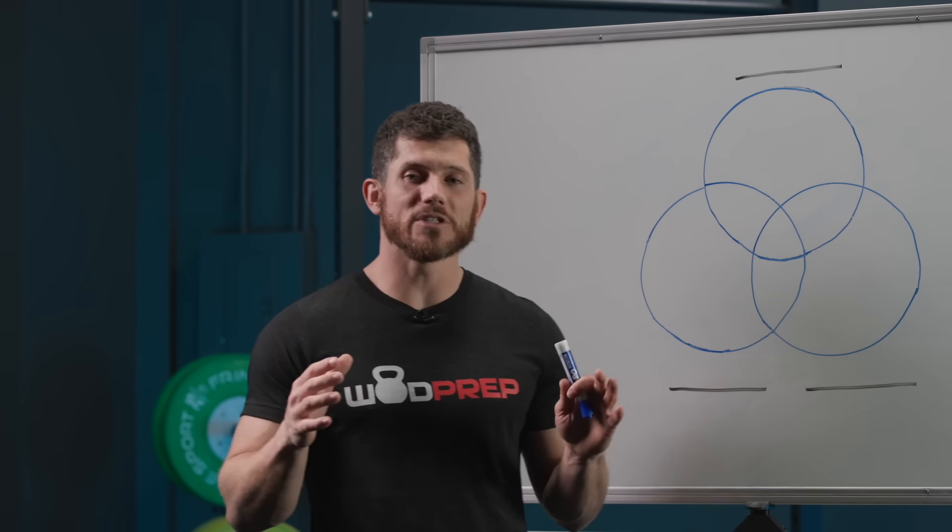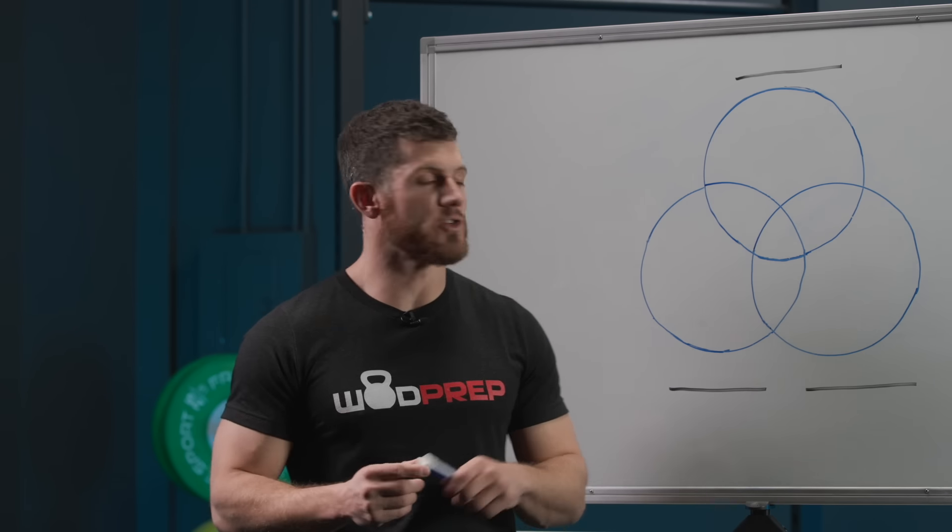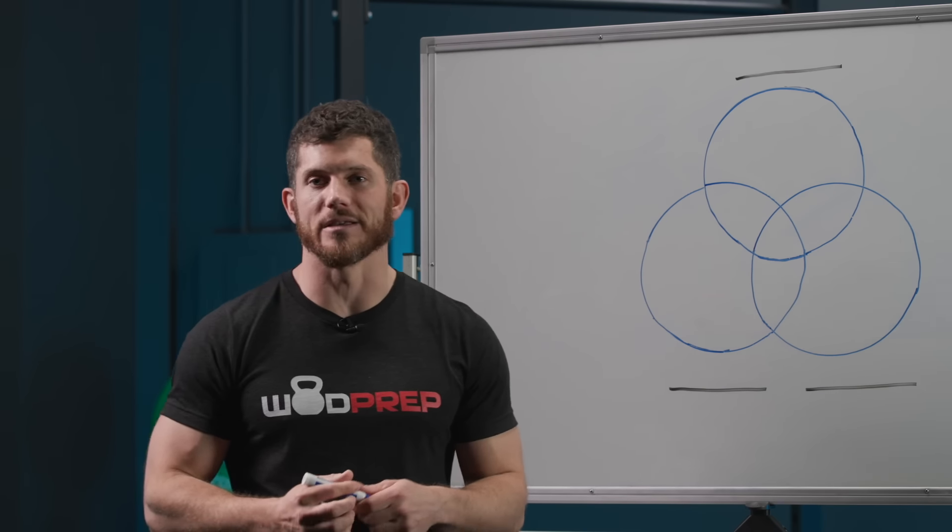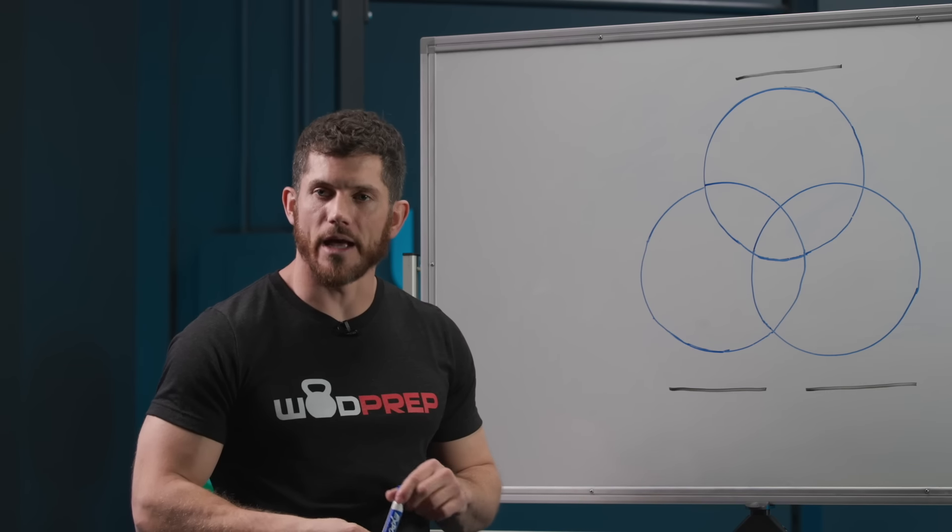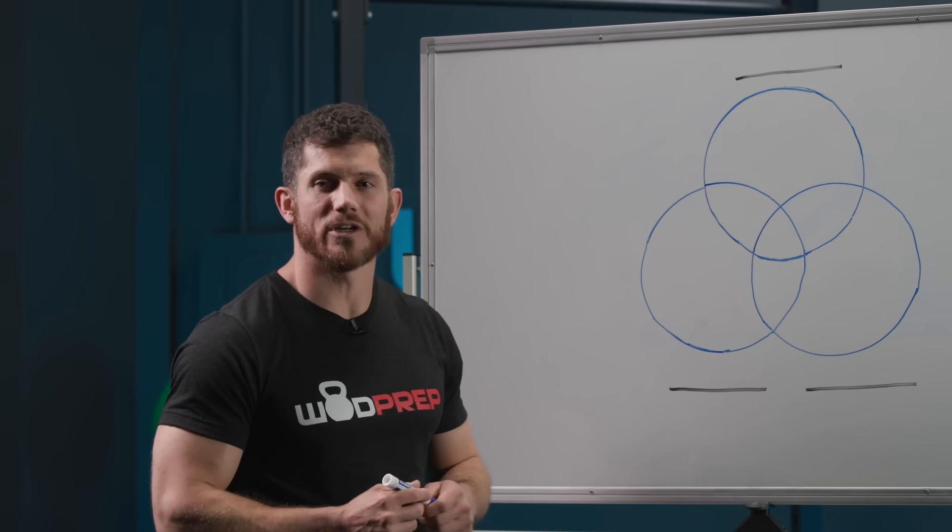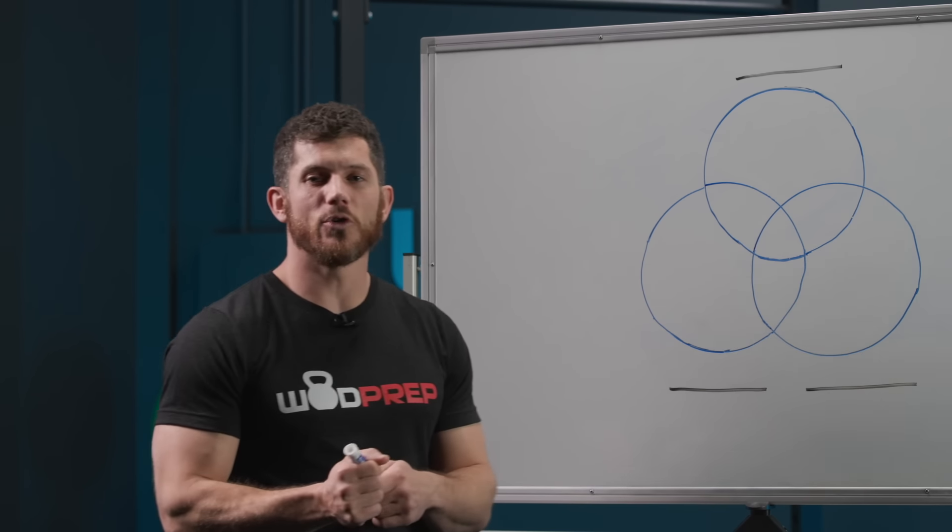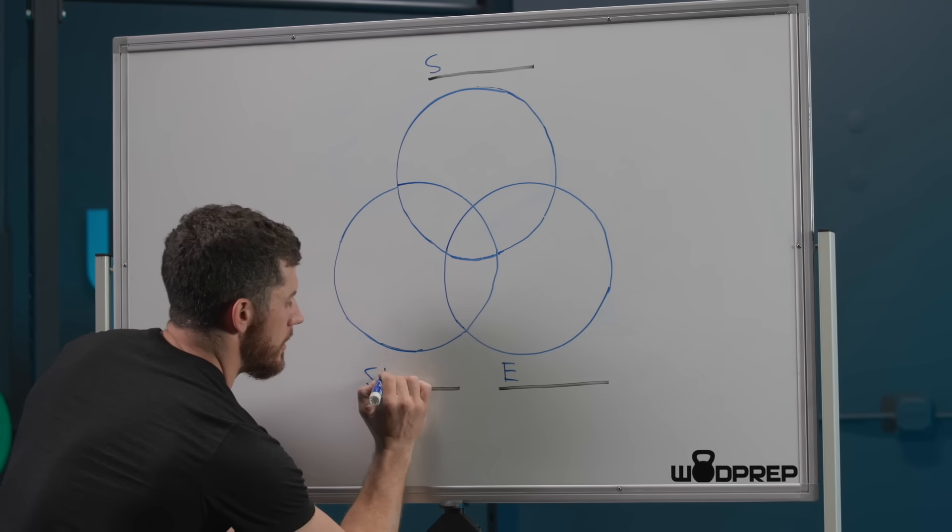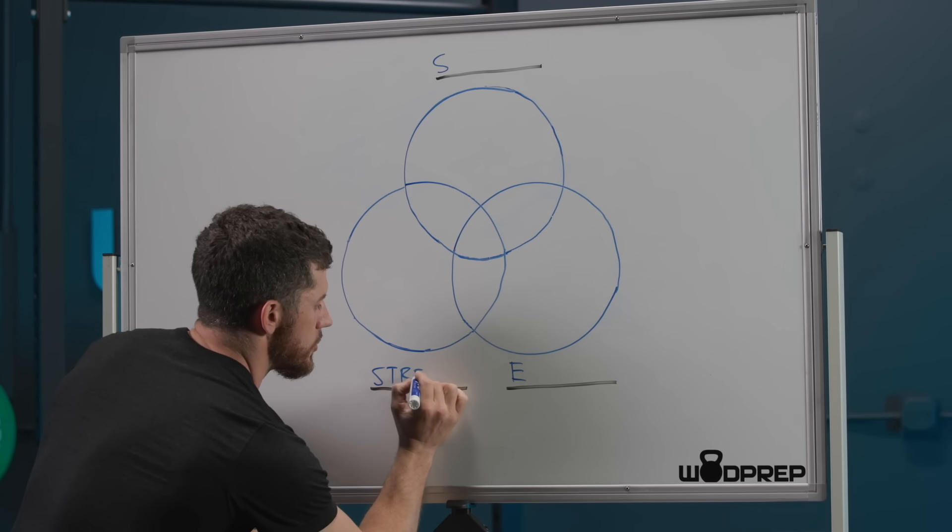So when it comes to becoming a well-rounded athlete, here's what you need to know. There are three main components. That's what this Venn diagram is. You can see we drew some pretty nice circles on the board. It only took us eight tries. So I'm going to give you a hint. These are the first letter. This is like hangman. Do you have any idea what the three core components of becoming a well-rounded athlete are? I'll start by filling in one.